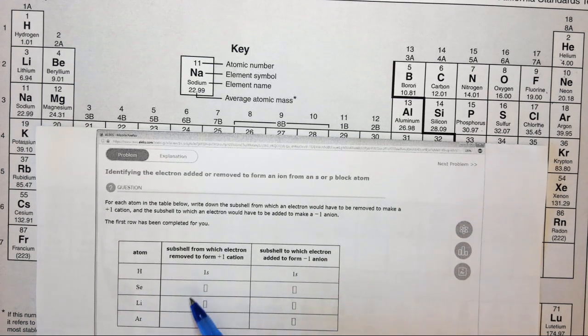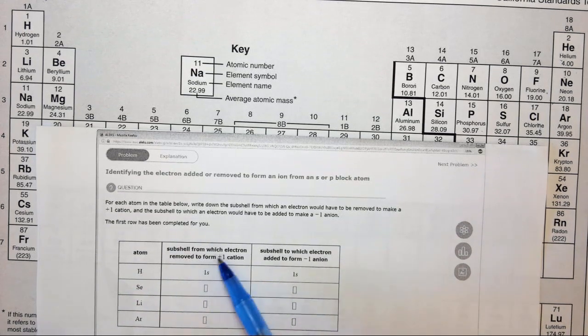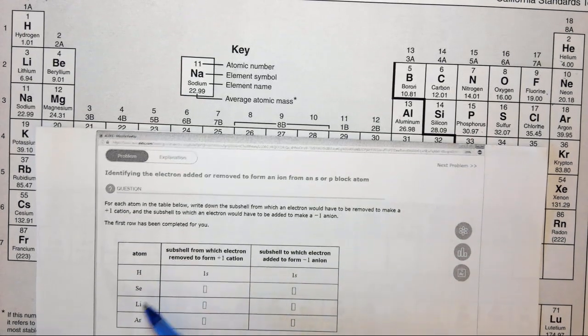In this question we're asked which orbital we would add or remove an electron from if we were looking to make ions out of these different atoms.